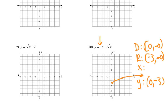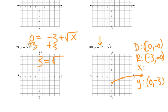To find the x-intercept for number 10, we make y equal to 0. Adding 3 gives us 3 equals √x. Squaring both sides: 9 equals x. So the x-intercept is (9,0).